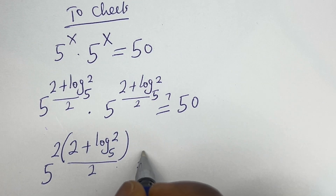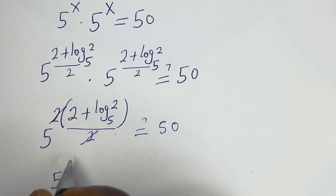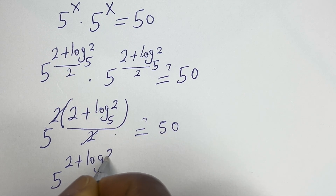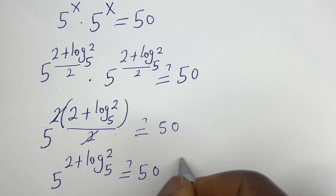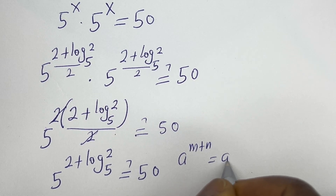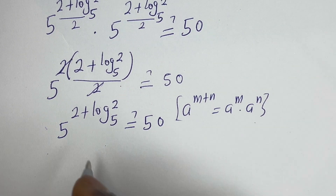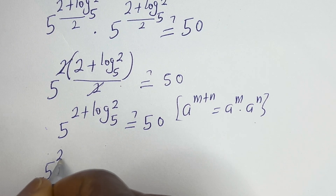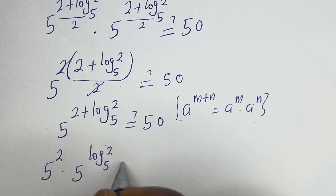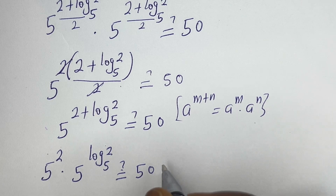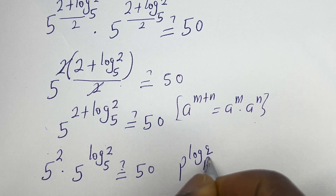Then this can be written as 5 to the power of 2 times the bracket 2 plus log 2 base 5 over 2, with the 2s cancelling, giving 5 to the power of 2 plus log 2 base 5, which must equal 50. Take note that if you have a to the power of m plus n, this is equal to a to the power of m multiplied by a to the power of n.